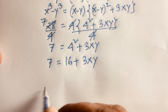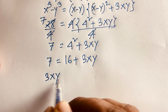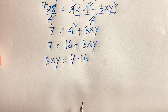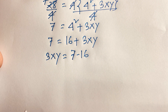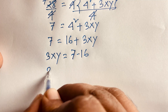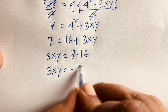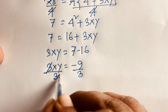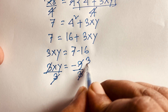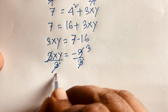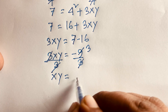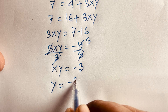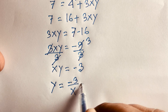Then, 3xy equals 7 minus 16, which gives 3xy equals negative 9. Dividing both sides by 3, we find xy equals negative 3. So y equals negative 3 over x, and this is our third equation.